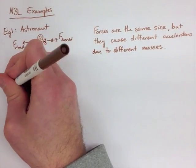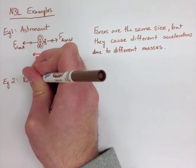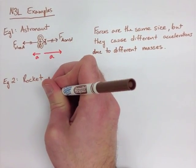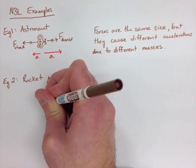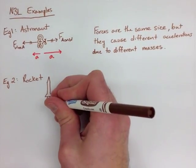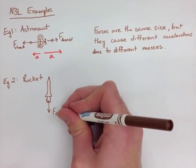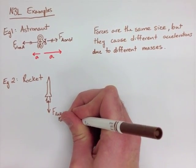The second example is a rocket taking off. This one's a little bit harder to picture. We have our rocket blasting off, pushing all these particles down. So we have the force of the rocket on all these little particles.